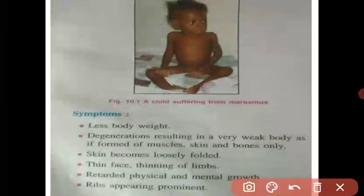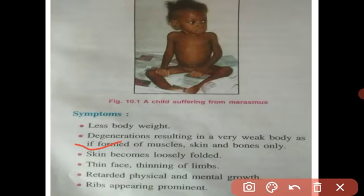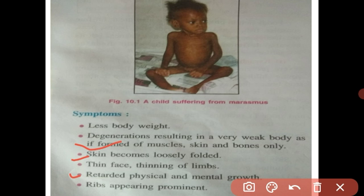The symptoms of Marasmus include less weight, as the children are not getting proper food. There is degeneration resulting in a very weak body — only muscle, skin, and bones remain. The body is essentially only bone with no muscle form. The skin becomes very loosely folded and is not tight because there are no muscles. The face becomes thin, the limbs become very thin, and the ribs appear prominent because there are no muscles. The children are retarded both physically and mentally.